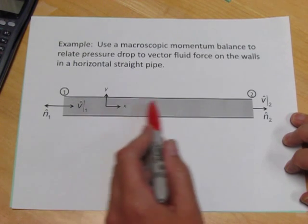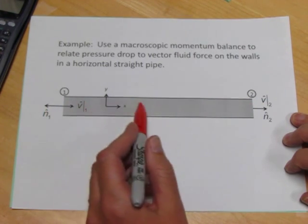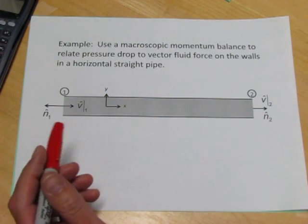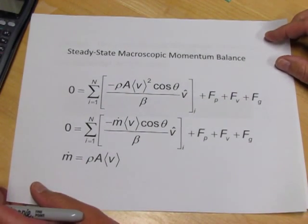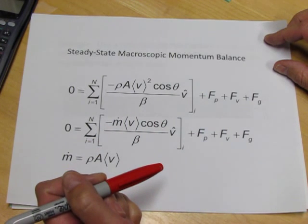So when we have turbulent flow in a fluid, it's characterized by a single average velocity throughout the flow. And as always when using the steady-state macroscopic momentum balance, we just have to identify the various terms and solve the equation.